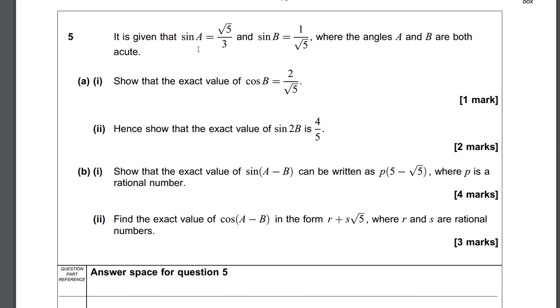In question 5, we're given that sine A is root 5 over 3 and sine B is 1 over root 5, where the angles A and B are both acute. In part A1, we need to show the exact value of cos B equals 2 over root 5.